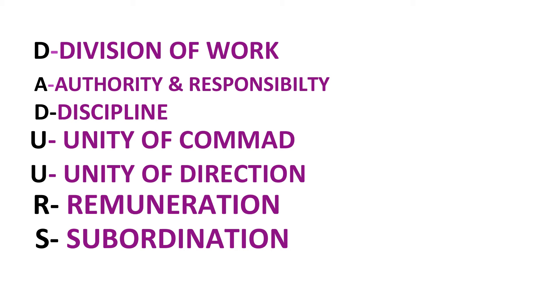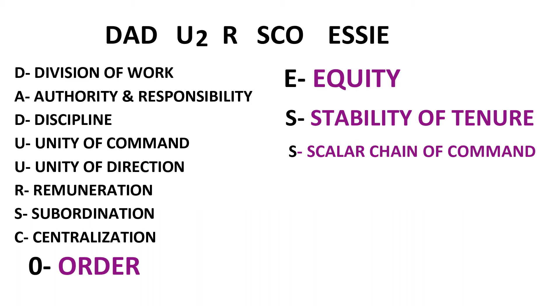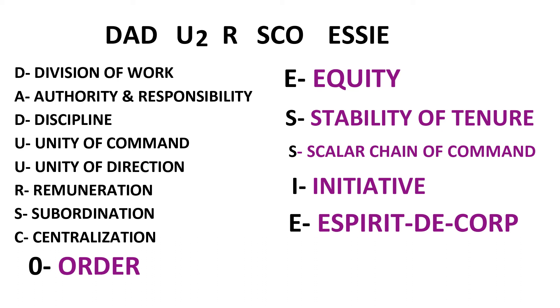Continuing: C stands for Centralization, O stands for Order, E for Equity, S for Stability of Tenure, the next S stands for Scalar Chain of Command, I for Initiative, and the last E is for Esprit de Corps — or 'Union is Strength.' This is the simple way to remember the 14 principles of Henry Fayol.